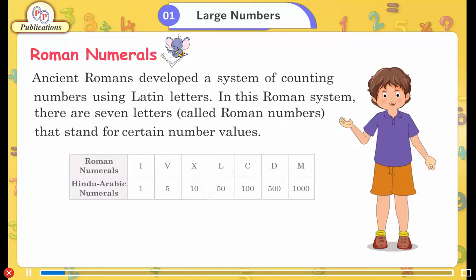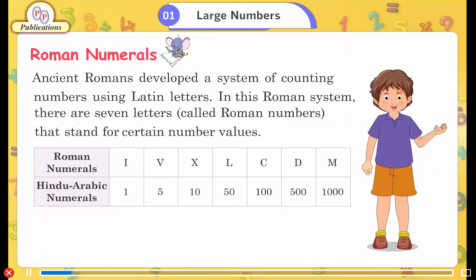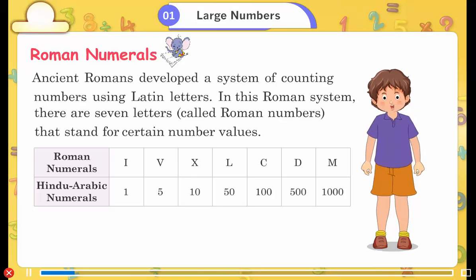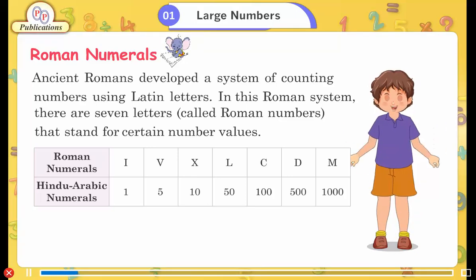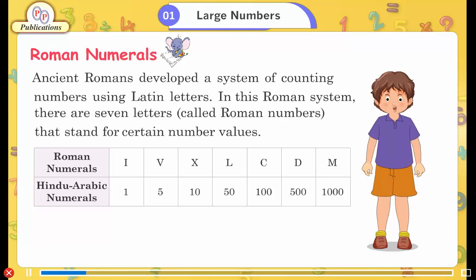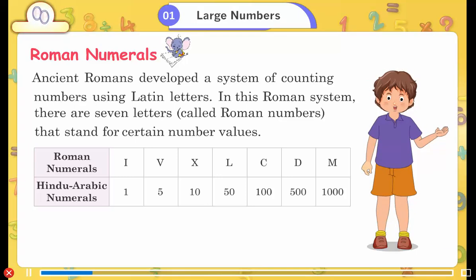The seven Roman numerals and their Hindu-Arabic equivalents are: I = 1, V = 5, X = 10, L = 50, C = 100, D = 500, M = 1000.